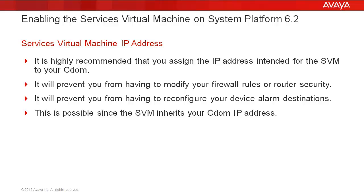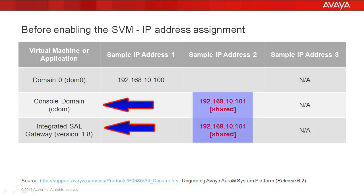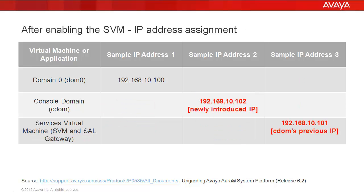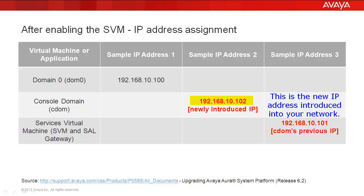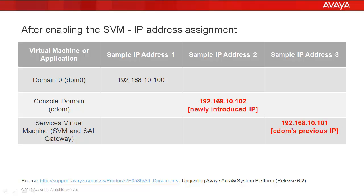The two tables following will summarize this IP address reassignment. In this first table, you can see how we have one IP address for domain 0 and a second IP address of 192.168.10.101 shared by the console domain and the Cell Gateway. Now, if you look at the second table, you can see that our domain 0 IP address has not changed, but the IP address intended for the SVM has been assigned to CDOM, and the previous CDOM IP address of 192.168.10.101 has been reassigned to our SVM.